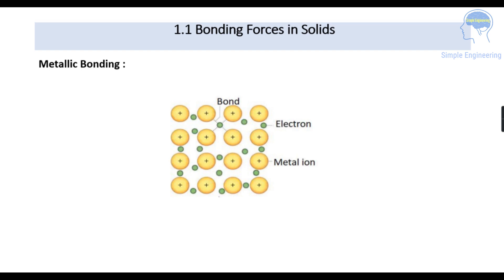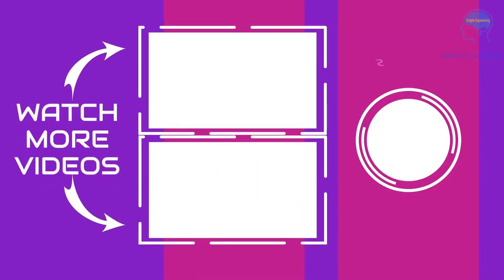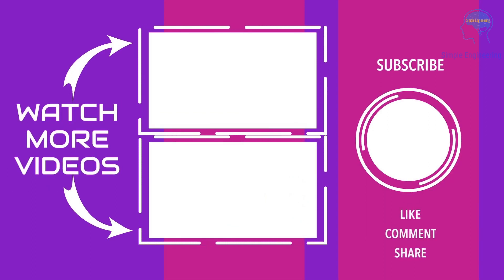This is about the bonding forces in solids and its three different categories: ionic bonding, covalent bonding, and metallic bonding. Hope this is clear for everyone. If you find this useful, please share it with others and subscribe to my channel. Thank you.